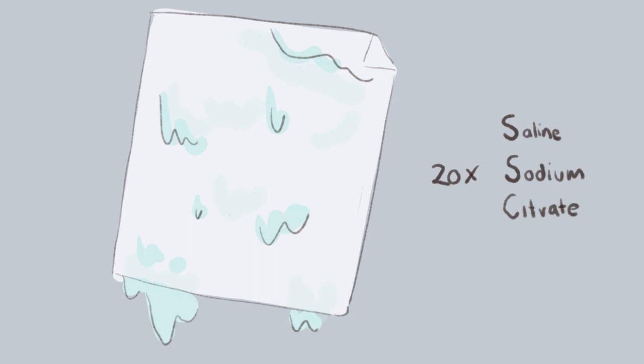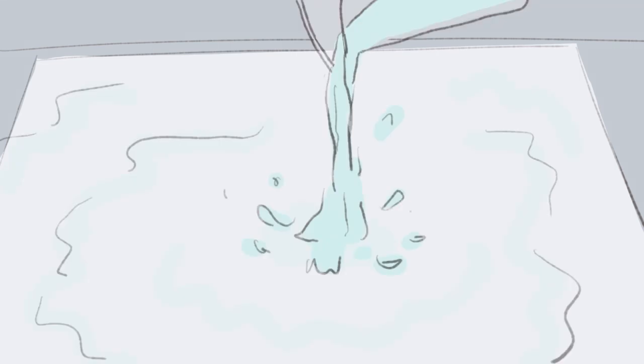A large sheet of filter paper that had been soaked in 20 times saline sodium citrate, or SSC, was placed on a large glass surface, then covered with more SSC until visibly soaked. A piece of perspex the same height as the gel was placed on top, followed by the gel strip, then another sheet of perspex.